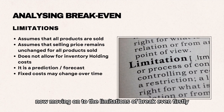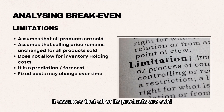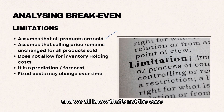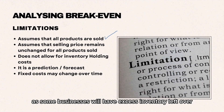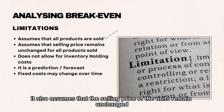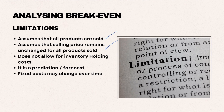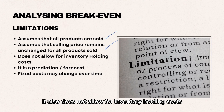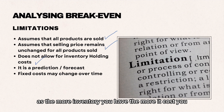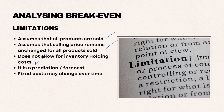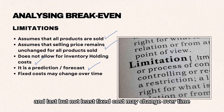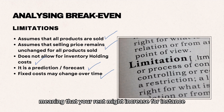Moving on to the limitations of breakeven. Firstly, it assumes all products are sold, and we know that's not the case as some businesses will have excess inventory left over. It also assumes the selling price of units remains unchanged, and does not allow for inventory holding costs — the more inventory you have, the more it costs you. It is also a prediction and a forecast, so it's never truly 100% accurate. And last but not least, fixed costs may change over time — for instance, your rent might increase.